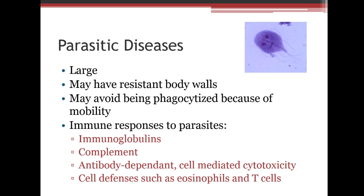Next are parasitic diseases. These organisms are large and usually have resistant body walls. They may avoid being phagocytized because of their mobility. The immune tools the body uses to fight off parasites include immunoglobulins, complement, antibody-dependent cell-mediated cytotoxicity, eosinophils, and T-cells.